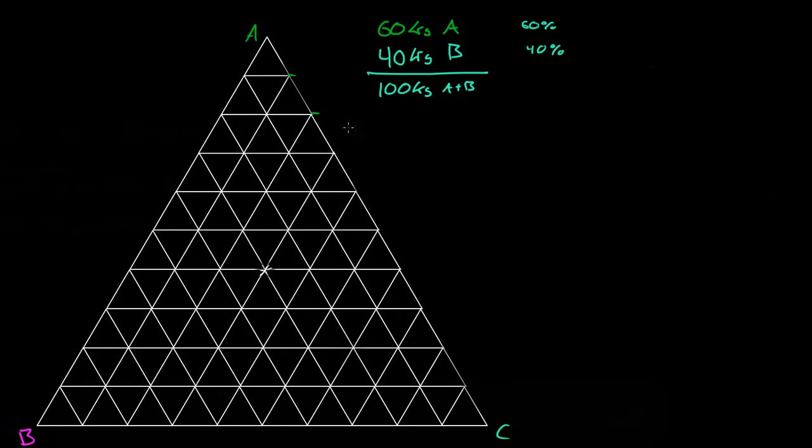So this is 90, this is 80, this is 70, this is 60. So to have a system that has 60% A means it is somewhere on this line. Now we have a system that is 40% B, and to have a system that is 40% B means it must be somewhere on one of these lines. So this is 90, 80, 70, 60, 50, 40. So to have a system that is 40% B means it must be on this line.